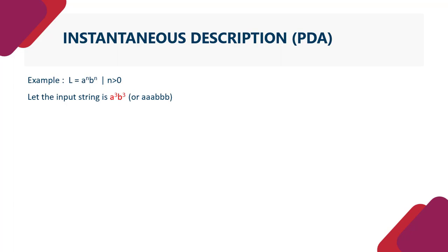For example, if we have the language A to the power N and B to the power N, this is a context free language such that N is greater than 0, meaning at least 1A and 1B. If we consider the string A to the power 3 and B to the power 3, if we expand this string, this is aaa and bbb. So this is our input string.